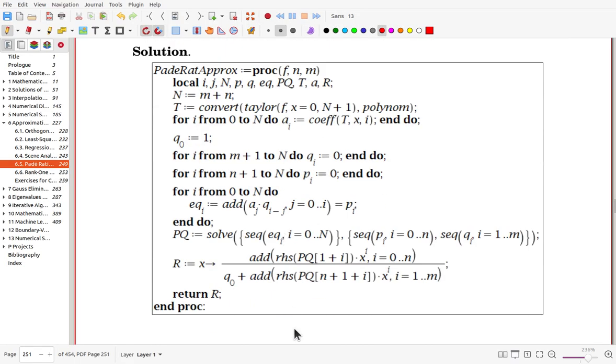Here we have a Maple code. Now, first we try to find the Maclaurin series by using Taylor command and convert it to be polynomial, having now n plus 1 term so that it is degree n for the polynomial.